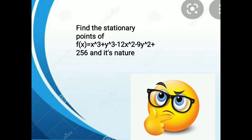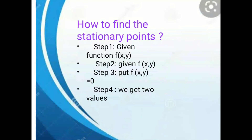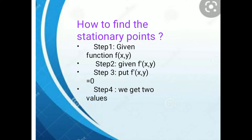The question is: find the stationary points of f(x, y) = x³ + y³ - 12x² - 9y² + 256, and find its nature. Think for a moment about how to find this. To find the stationary points and their nature, there are some steps. Step 1: note the given function f(x, y).